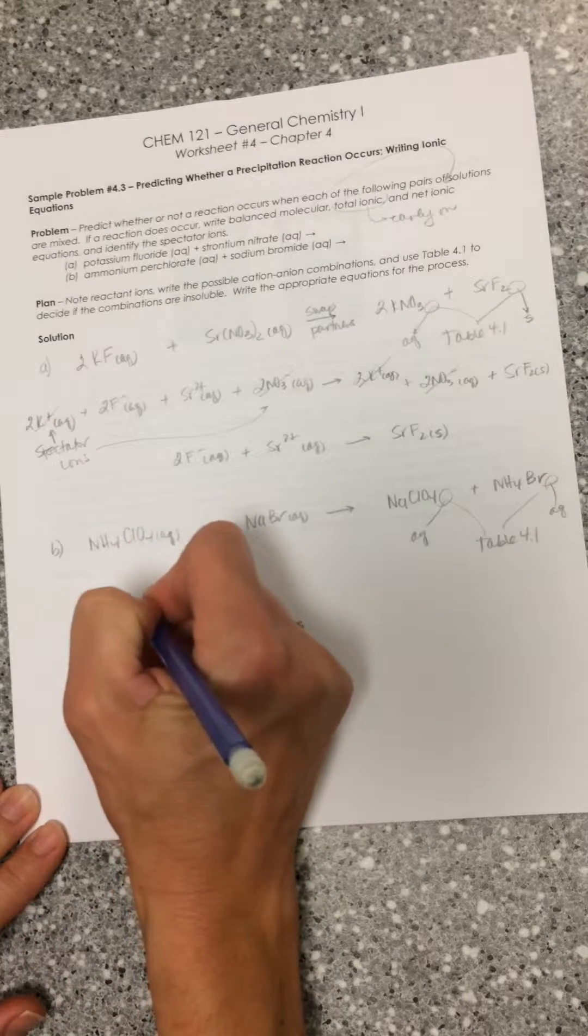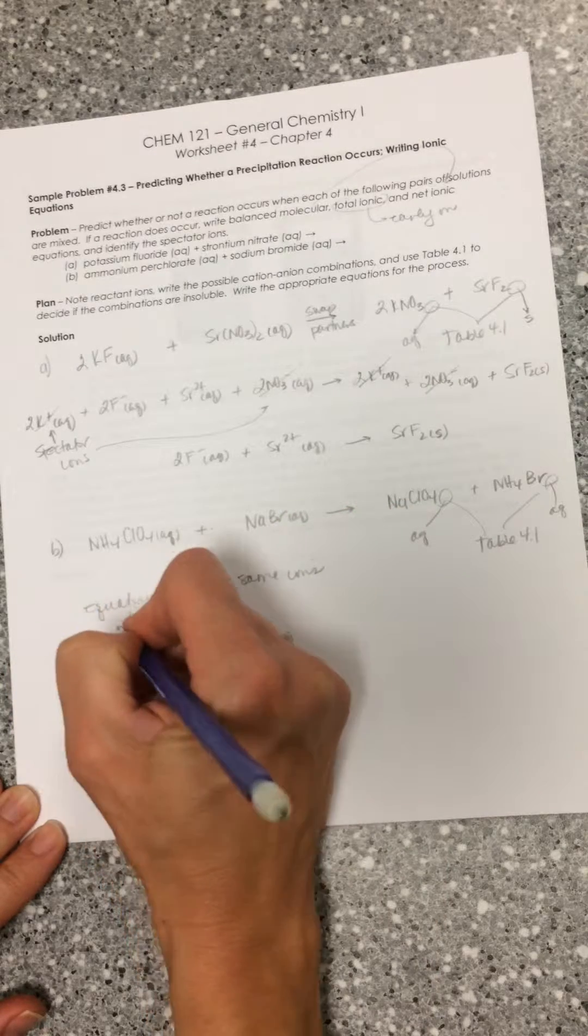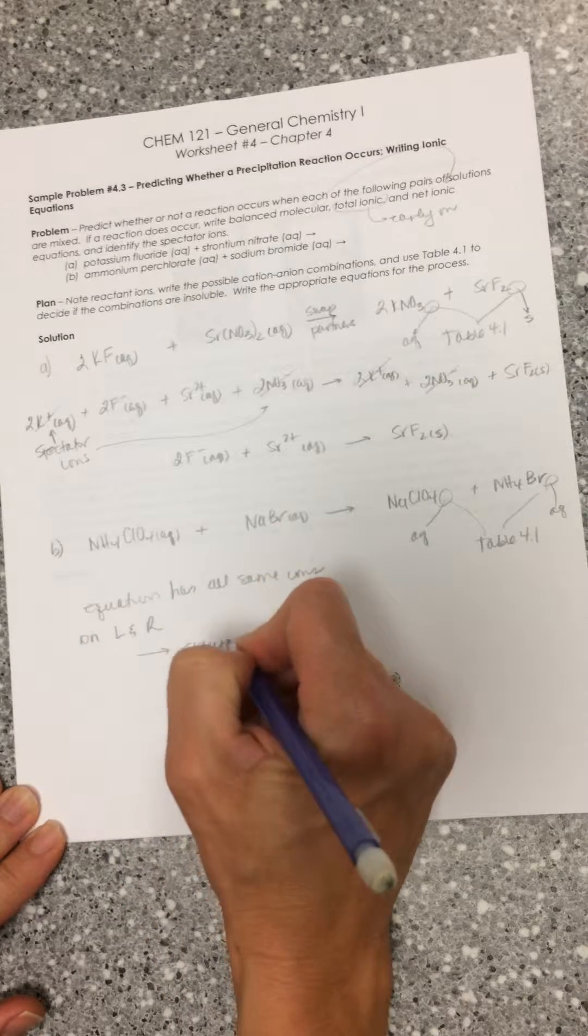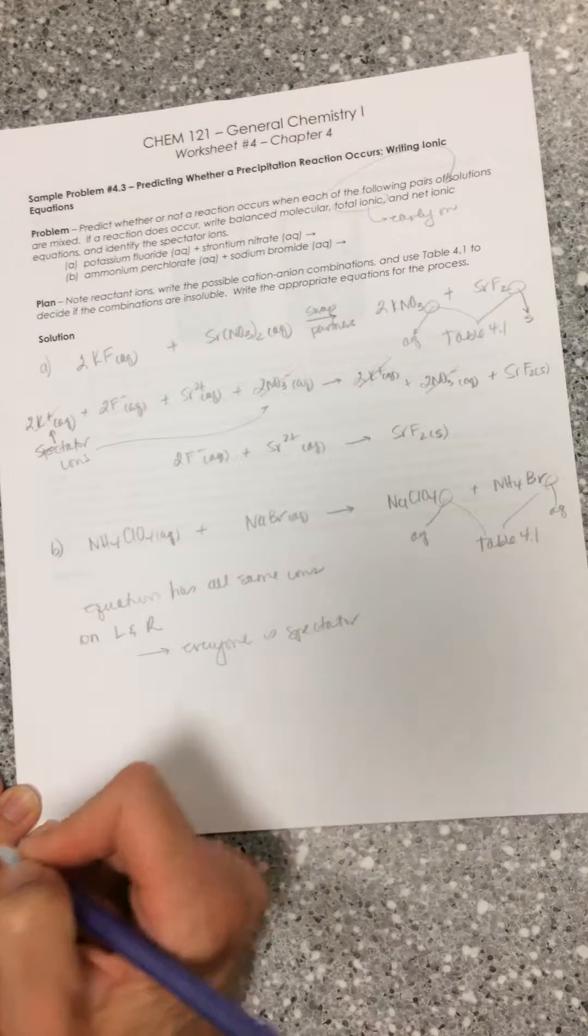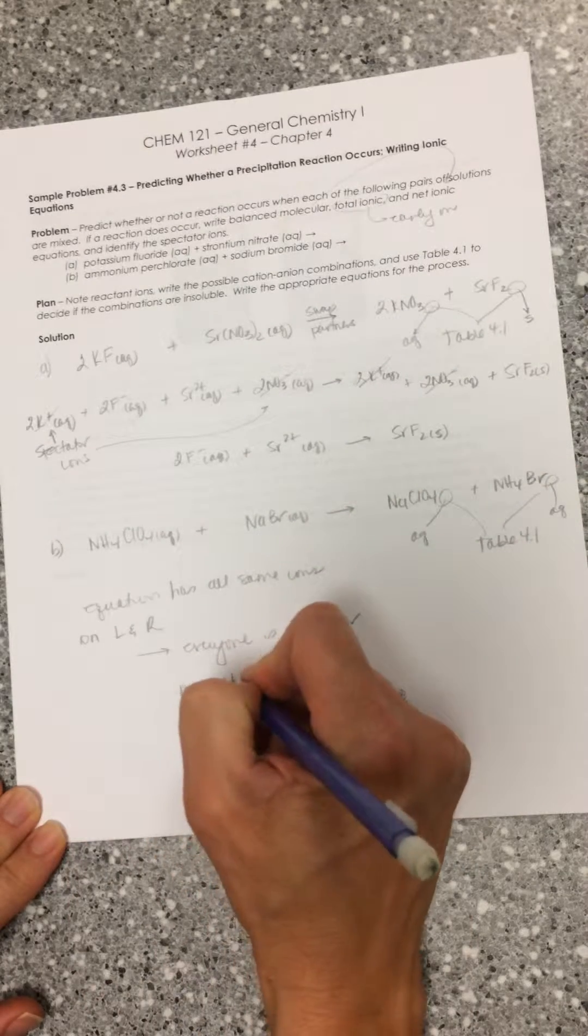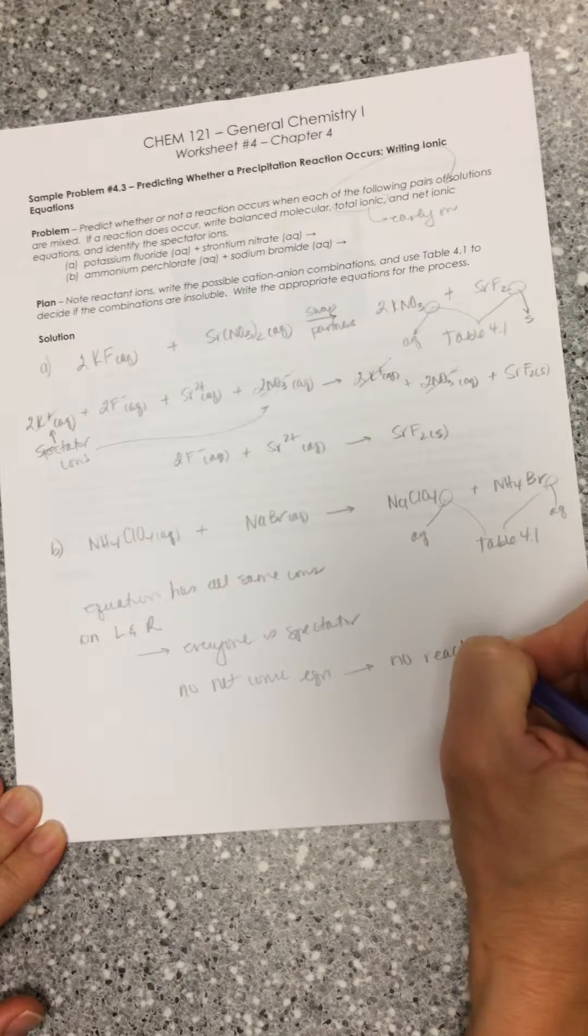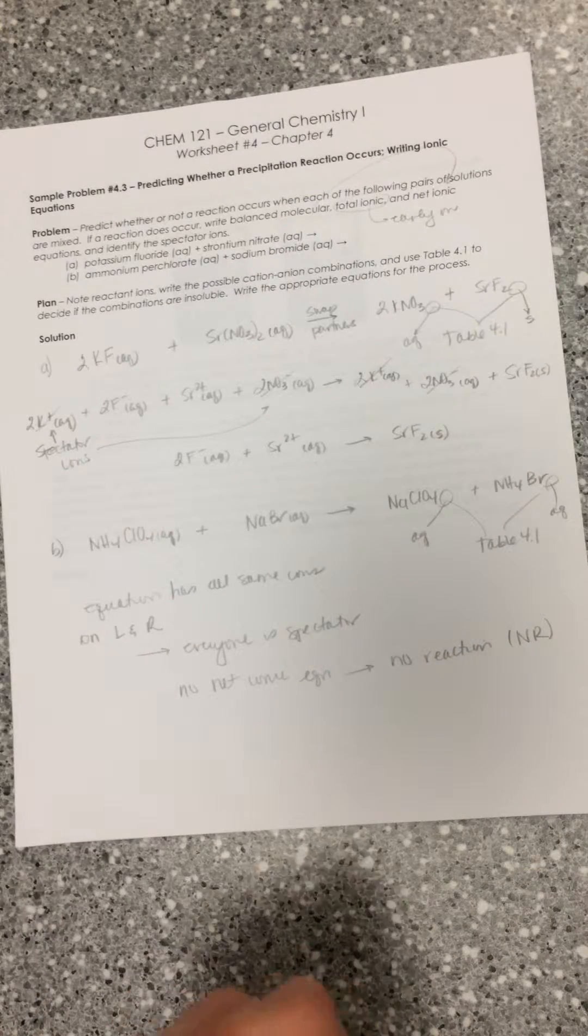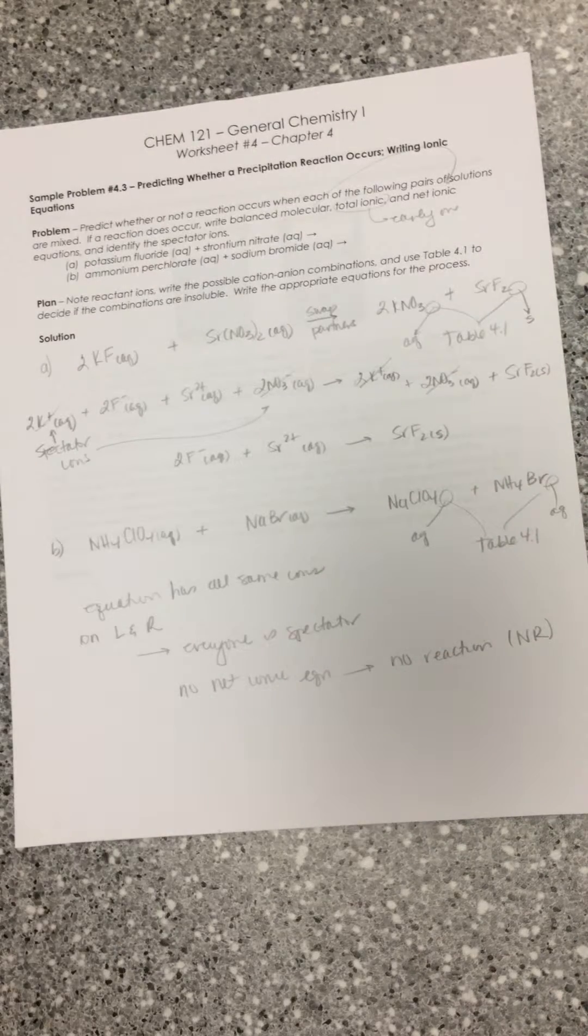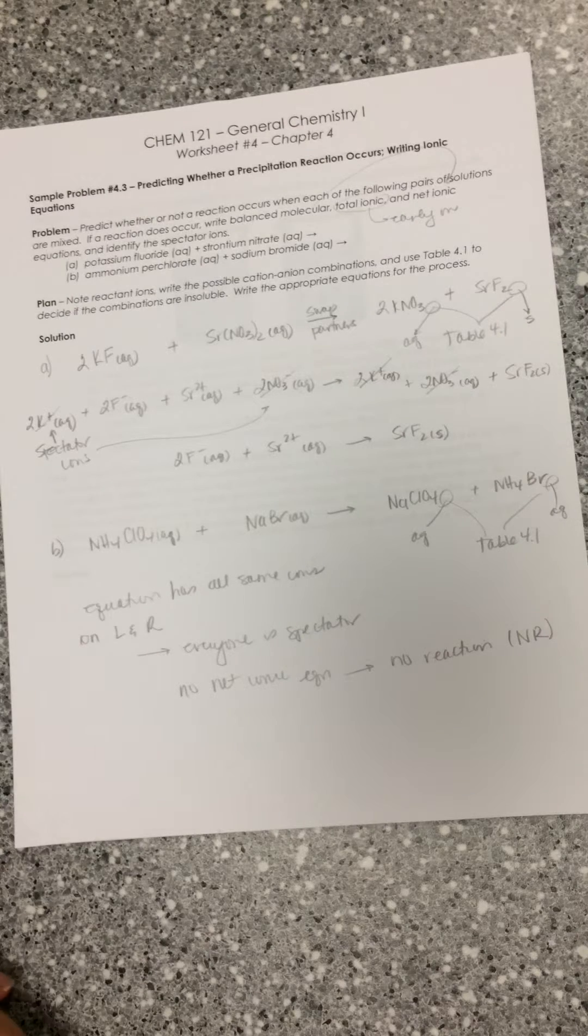This equation has all the same ions on the left and right, so basically everyone is a spectator. Knowing that we cross off spectator ions to make our net ionic, there's no net ionic equation because there's no reaction. You can use the abbreviation NR to indicate no reaction. Don't presume by necessity that you're going to have a precipitate that forms. It might not be the case, and you'll test this out in your lab.